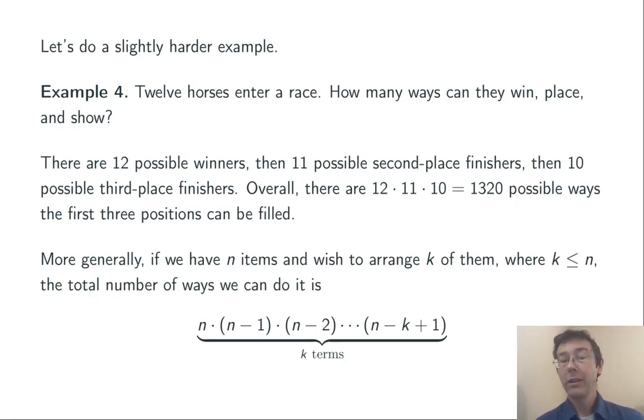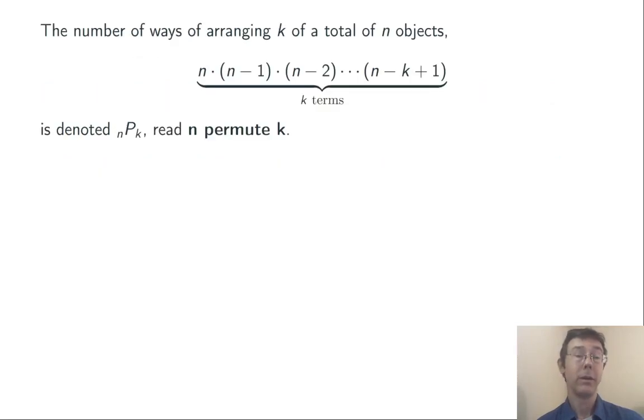More generally, suppose we have n items, or horses, or people, or whatever, and we want to count the number of arrangements for just k of those. So there's n choices for the first, then n minus 1 for the second, and so on. We multiply those numbers using the fundamental counting principle until we have k terms total. The last thing we're multiplying is going to be n minus k plus 1.